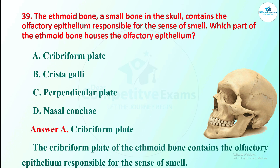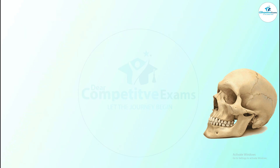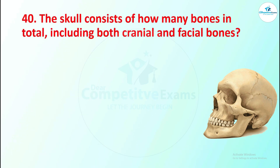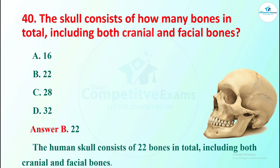The last question of this session: the skull consists of how many bones in total, including both cranial and facial? Options are 22, 28, or 32. The right answer is 22. The human skull consists of 22 bones in total, including both cranial and facial bones.